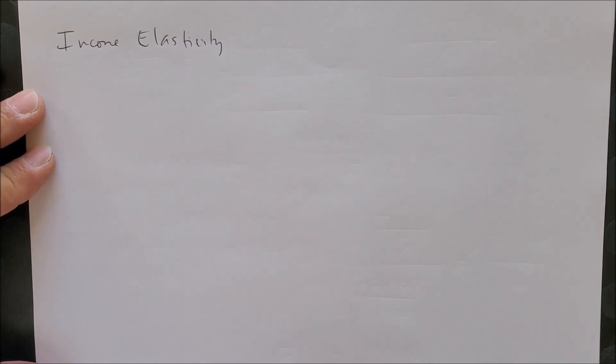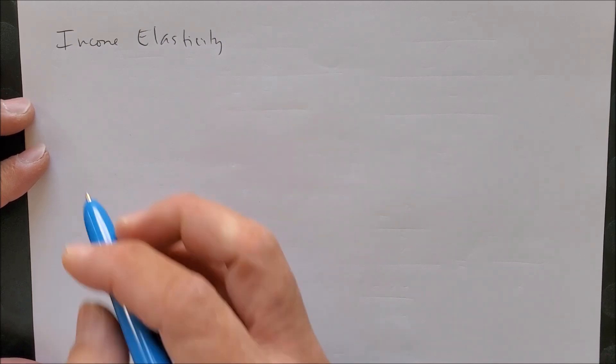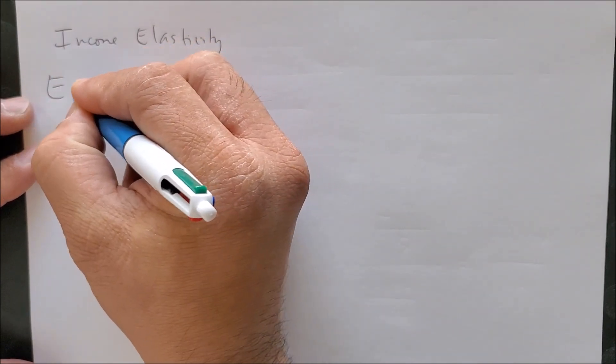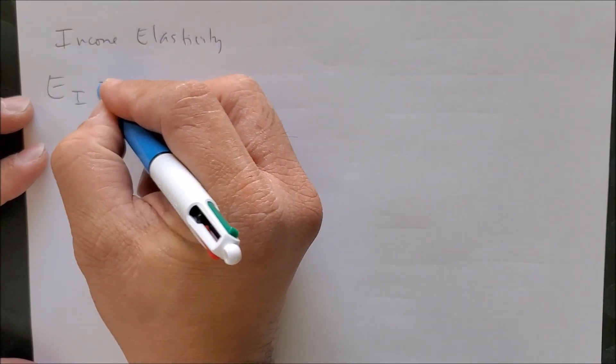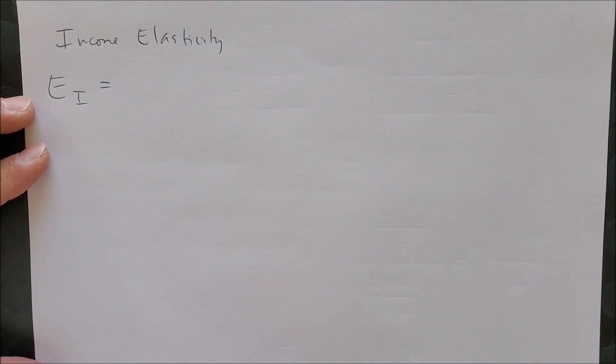And so now we can focus on what happens if we are not given numbers in percent format but rather raw numbers. So we know that it becomes E sub I, our equation.